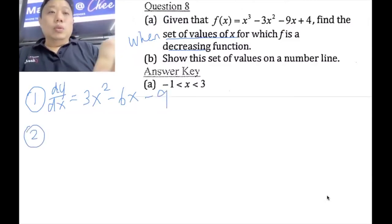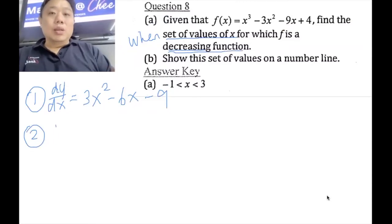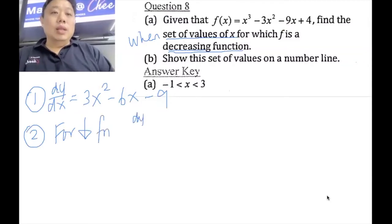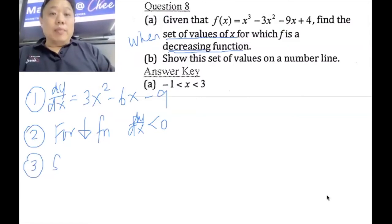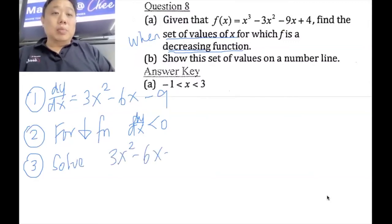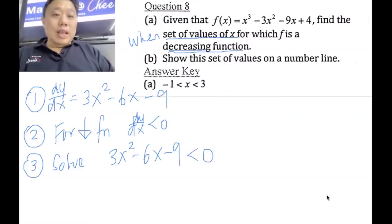At step two — and this step is worth one mark, so always write it — for decreasing function, dy/dx is less than 0; for increasing function, dy/dx is greater than 0. So now in the third step, I need to solve the inequality: 3x squared minus 6x minus 9 less than 0.